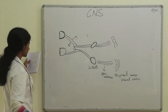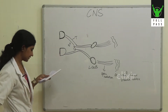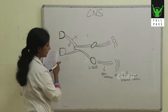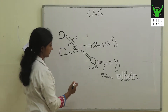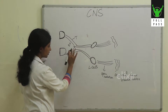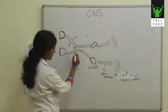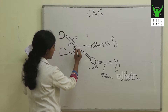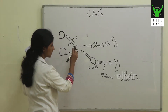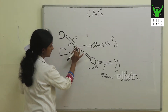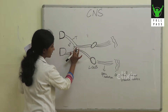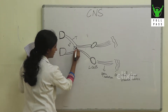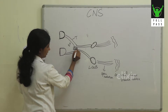Moving on to the next question: pituitary tumours cause bitemporal hemianopia. The pituitary is situated almost at the optic chiasma, and when pituitary tumours enlarge, they compress the optic chiasma, causing compression in the middle of it.